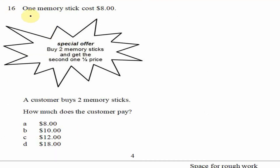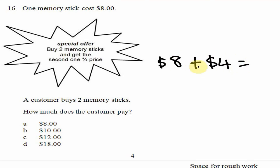Question 16: one memory stick costs $8. There's a special offer — if you buy two memory sticks, you get the second one at half price. A customer buys two memory sticks. For the first one, the customer pays the full price of $8. For the second, half of $8 is $4. So $8 plus $4 equals $12, which is option C.